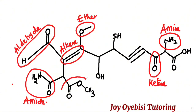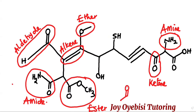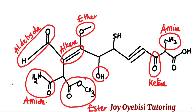The one right beside the amide is known as an ester. The difference between an ester and an ether is that an ether is oxygen single bonded to two different carbons, while an ester has a carbonyl group connected to an ether. When a carbonyl group is connected to an ether, we say it is an ester.